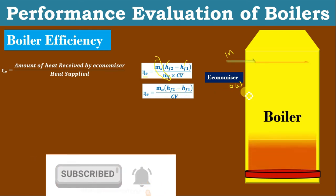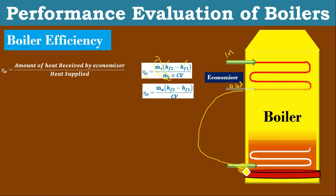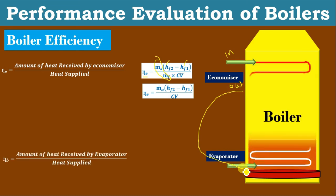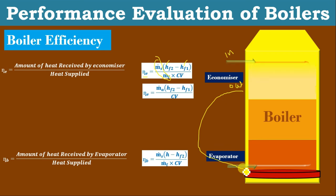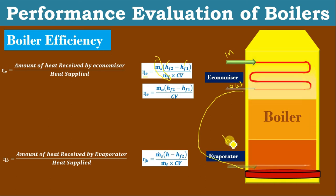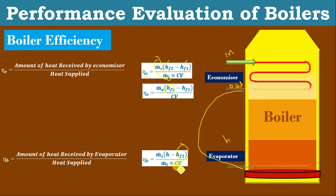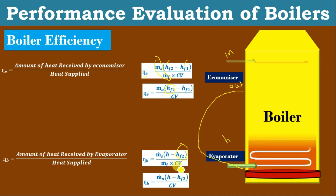Next, after the economizer, the water enters into the evaporator, where it converts water to steam. To find out the evaporator efficiency, again the amount of heat received by the evaporator divided by heat supplied. The efficiency of the evaporator: mass of steam generated × (outlet enthalpy of the evaporator — which may be wet steam, saturated steam, or superheated steam — minus inlet enthalpy of the evaporator, that is the economizer outlet enthalpy Hf2), divided by Mf × Cv. This equation can be written as: M_dot_A × (H − Hf2) / Cv.